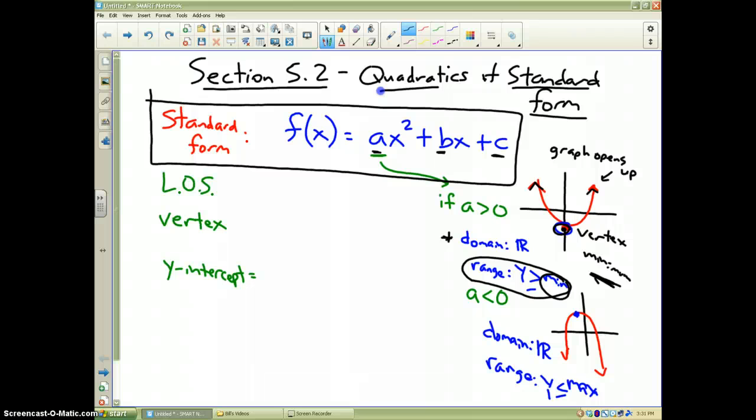If a is less than 0 it means it's negative which flips the graph upside down. So the graph will open down. The water pours out. The domain is still all real numbers.